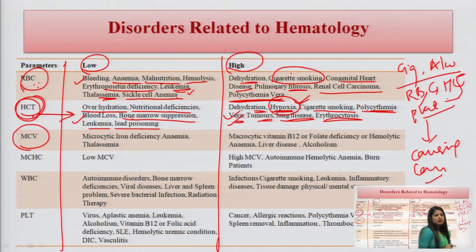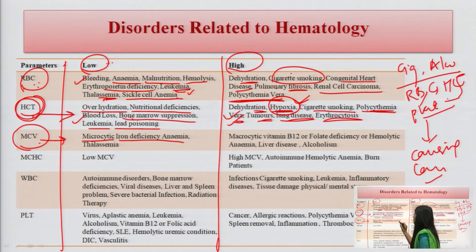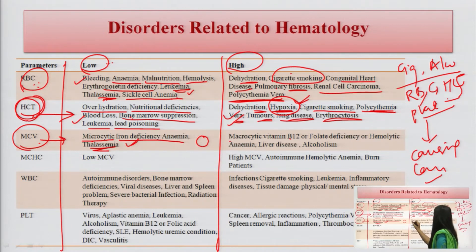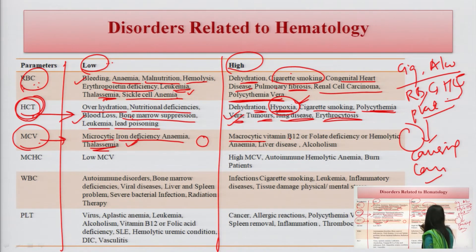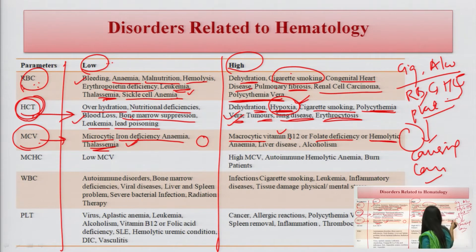MCV — mean corpuscular volume — indicates the size of RBCs. Low MCV is called microcytic, meaning small RBC size, and occurs due to iron deficiency anemia or thalassemia. High MCV is called macrocytic anemia, where cell size is increased. Macrocytic anemia occurs due to vitamin B12 or folate deficiency, hemolytic anemia, liver disease, or alcoholism.